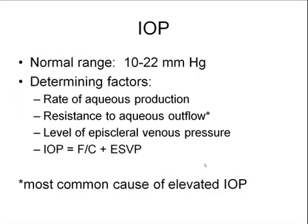The factors that determine the level of IOP include the rate of aqueous production, the resistance to aqueous outflow or the facility of outflow, and the level of episcleral venous pressure. The interrelationship of these variables is seen in the Goldman equation, where IOP equals production divided by the facility of outflow plus the episcleral venous pressure. The most common cause of elevated IOP is decreased outflow or increased resistance to outflow.